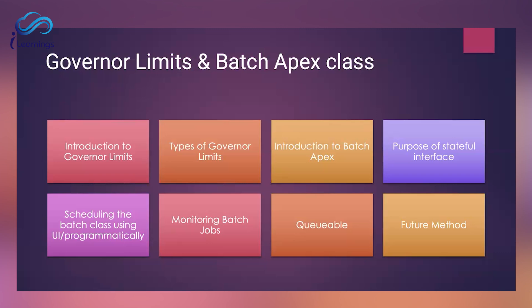To implement custom iterables in Salesforce, you define a class that implements two essential interfaces: Iterable and Iterator. The Iterable interface has a single method — iterator — which returns an instance of the Iterator interface. The Iterator interface has three vital methods: hasNext, next, and remove. hasNext checks if there are any more elements available in the collection, next retrieves the next element, and remove allows you to remove the last element returned by the next method.